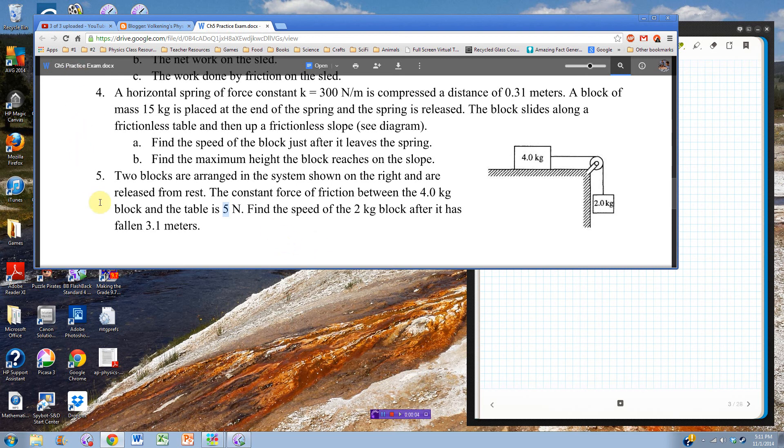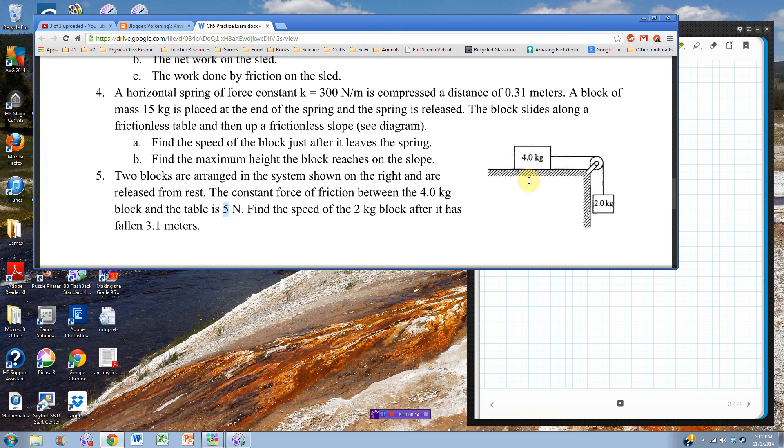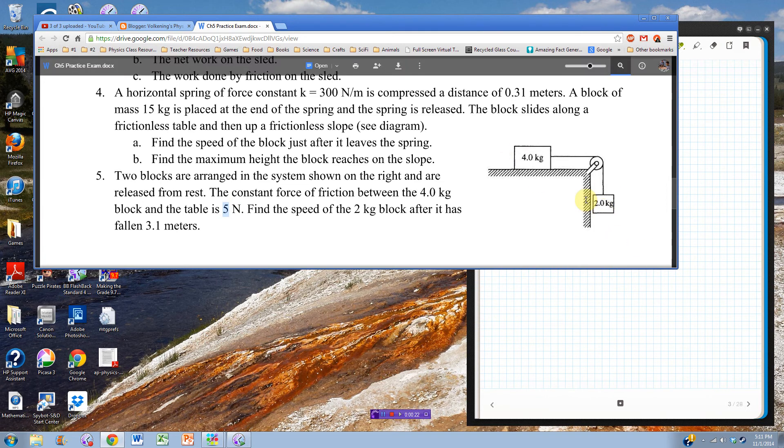This is the chapter 5 practice test number 5, last one. We have two blocks arranged in this little system here, and they're released from rest. The constant force of friction between the 4 kilogram block and the table is 5 newtons. We want to find the speed of this block, and indeed the entire system, after this block has fallen 3.1 meters.